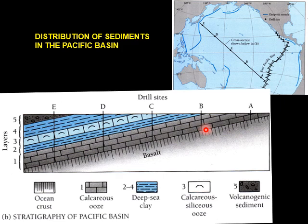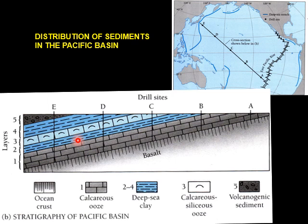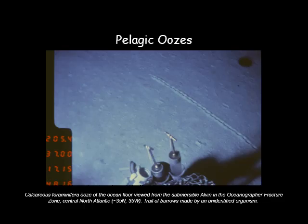This is a cross-section showing the stratigraphy of the Pacific Basin. The substrate is basalt, as expected, and it is thick as you go closer to the East Pacific Rise. But further away to the Northwest, the sediment capping is composed of thicker deep sea sediments consisting of calcareous oozes to deep sea clay to calcareous siliceous ooze with minor volcanogenic sediments.